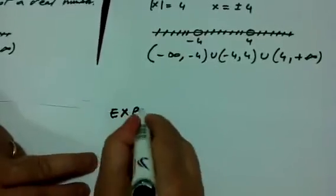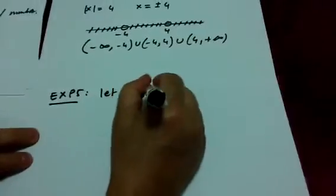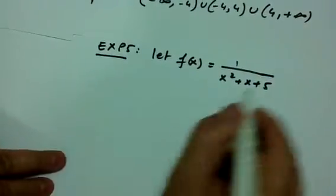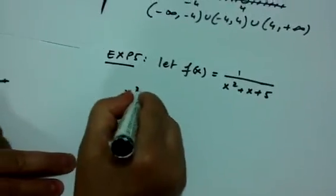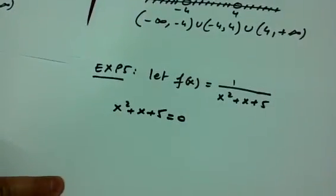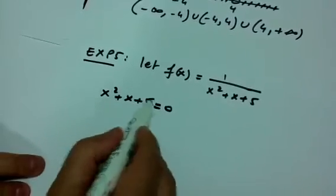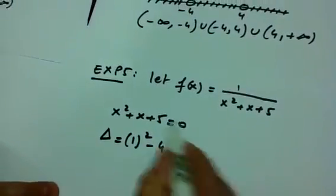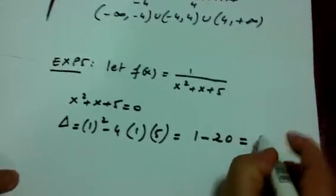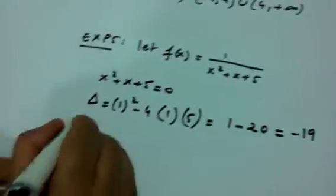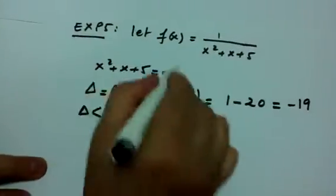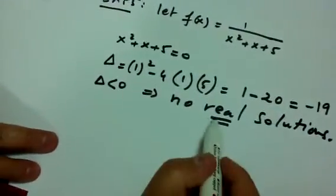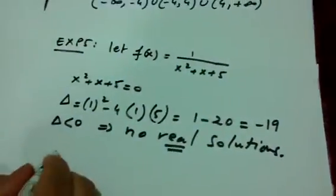Example 5: let f(x) equal one over (x² + x + 5). We find values of x that make the denominator zero — this is a quadratic equation. It doesn't factor easily, so we use the discriminant: delta equals b² minus 4ac, which is 1 minus 4(1)(5), giving 1 minus 20, which equals negative 19. Since the discriminant is less than zero, this equation has no real solutions.